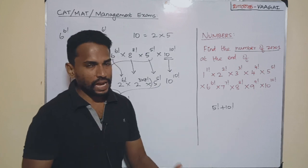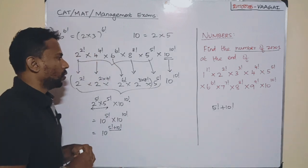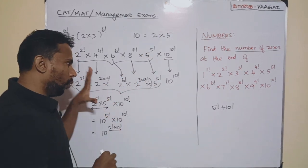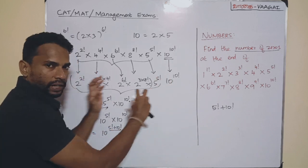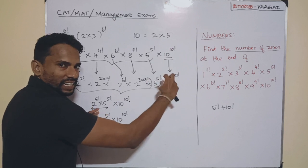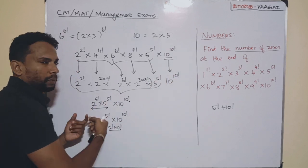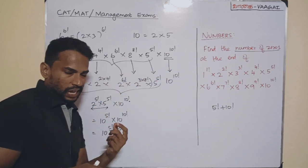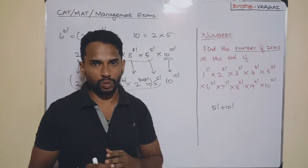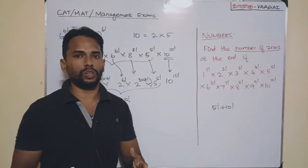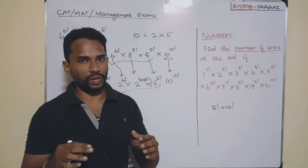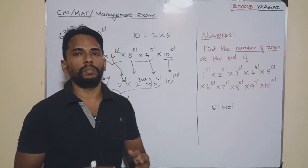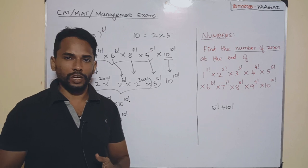So the answer is 5! + 10!. The expression will end with (5! + 10!) zeros. The key point to be careful about is: though you have more powers of 2, you have fewer 5s to make pairs, so the power of 5 — being lesser — decides the power of 10. Multiplying with 10^(10!) gives the final answer: 5! + 10! zeros. I hope you understood this. If you have any doubts, post them in the comment box. We'll catch up in another session with another interesting question. Thank you so much.